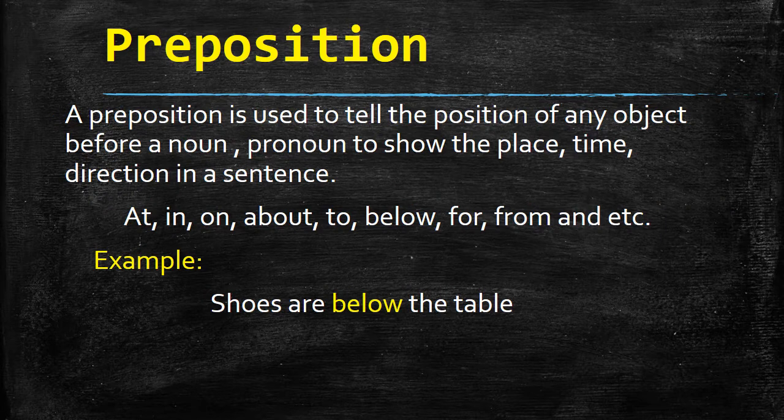Our next part of speech is called preposition. A preposition is used to tell the position of any object, before a noun or pronoun, to show place, time, or direction in a sentence. For example: at, in, on, about, to, below, for, from, etc. Aise koi bhi words jo kisi bhi sentence mein istamal hotay hain kisi bhi cheez ki position ko batane ke liye, unhein prepositions kahenge. For example, 'Shoes are below the table' — below is called a preposition here, which describes the position of the noun. Kisi bhi cheez ki position batane ke liye jo helping words ya connecting words use honge, unhein prepositions kehtay hain.